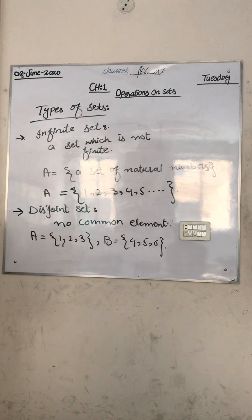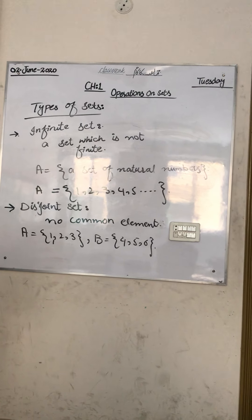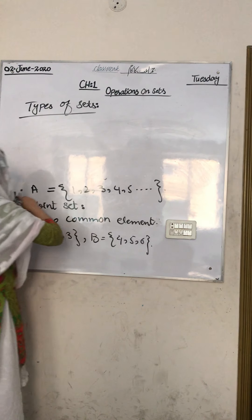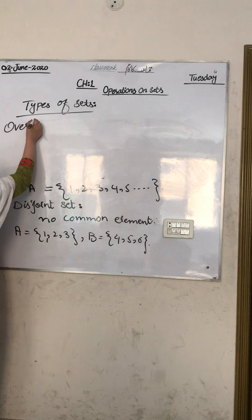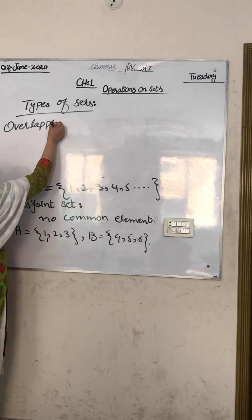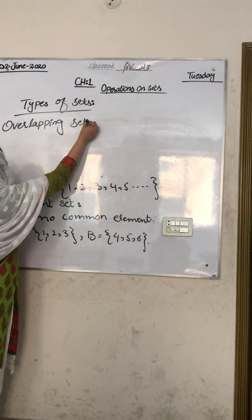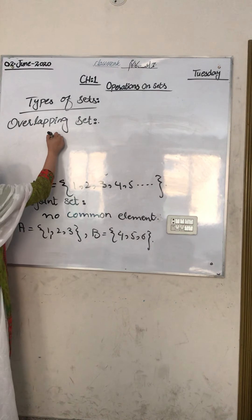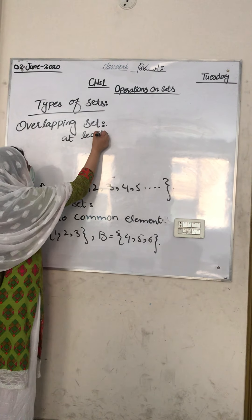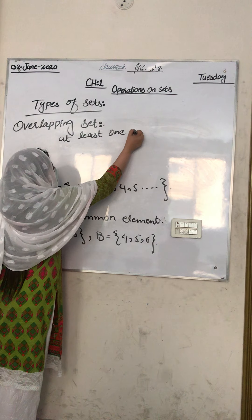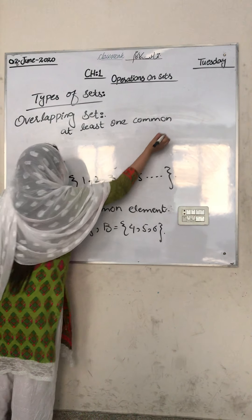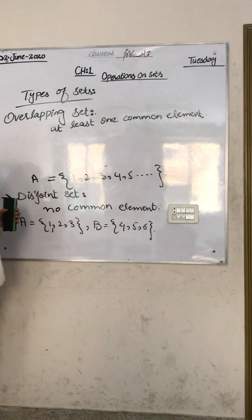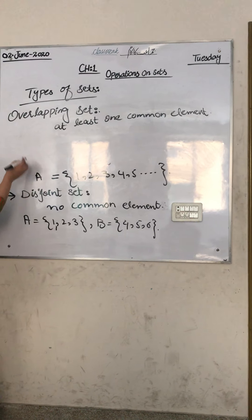Our next type is overlapping set. What is an overlapping set? An overlapping set is a set which has at least one common element.